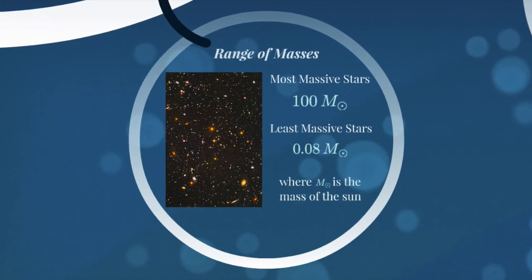So stars vary greatly in mass, not as greatly as the luminosity. The most massive stars, and we'll find out why there's a limit on the mass of a star, is 100 times the mass of our sun. And the least massive stars that we observe are only 0.08, or 8%, the mass of our sun.